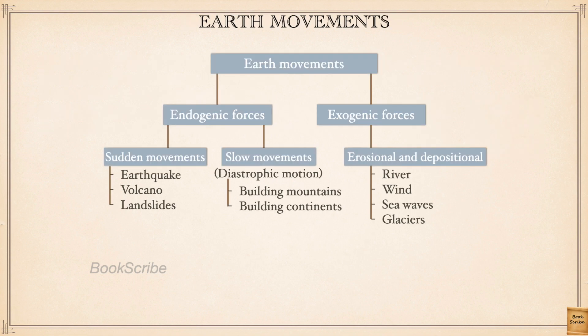Under endogenic forces, there are two types of movements: sudden movement and slow movement. Sudden movements include earthquakes, volcanoes, and landslides, which we will see later. Slow movements are diastrophic motions, caused by diastrophic forces, which result in the building of mountains and continents. Exogenic forces are erosional and depositional forces, with agents such as rivers, wind, sea waves, and glaciers.